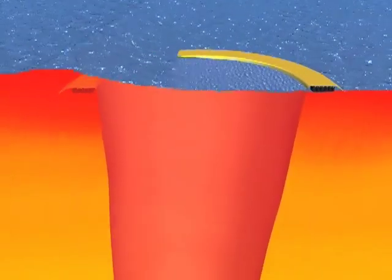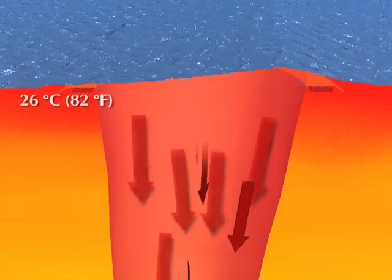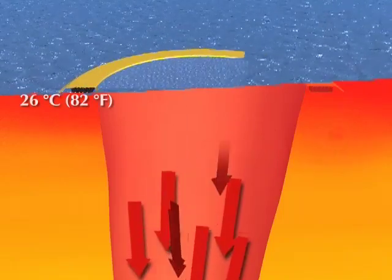Where hurricanes form, the ocean is about 82 degrees Fahrenheit on the surface. As divers know, the water is much colder down below.